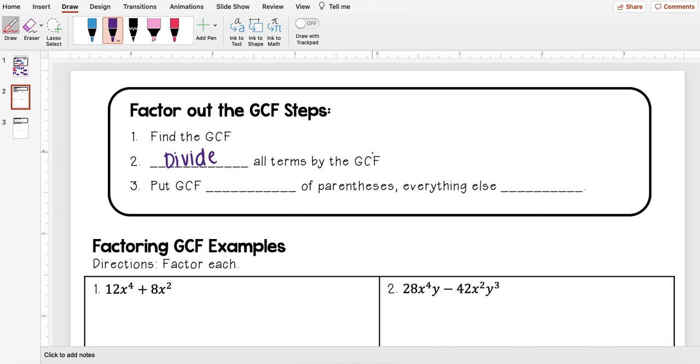so kind of going back to what we did in 7.3b, and then for that last step we're going to put the GCF outside of the parentheses and everything else inside.